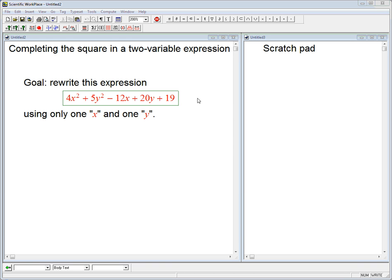Rewrite this expression using only one x and one y. And one thing you might note is I didn't write an equation here. I didn't write this equal 0 or equal something else. Because I want to emphasize that you can complete the square in an expression, not just an equation. You don't have to have an equals. You don't have to do things on both sides of an equal sign like a lot of books do this.